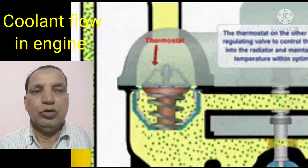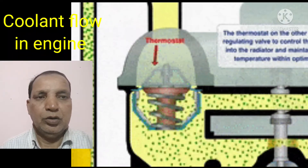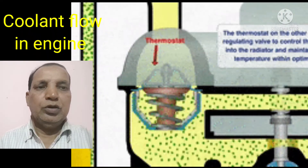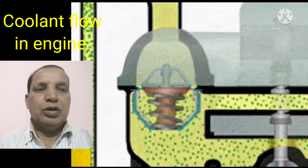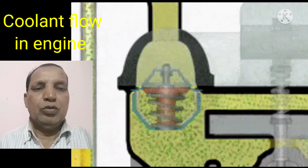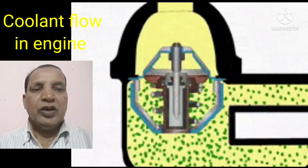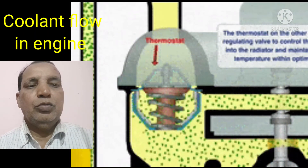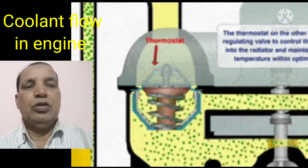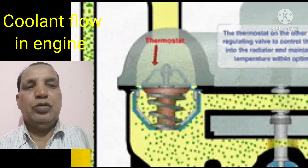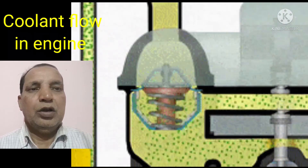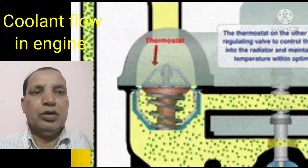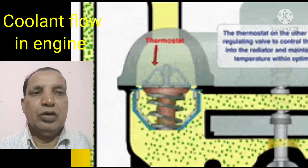When the coolant flows through the radiator, the coolant is cooled by the fan of the engine. Continuously when the engine is running, the fan will also be rotating and the coolant temperature will gradually come down, giving better engine performance.